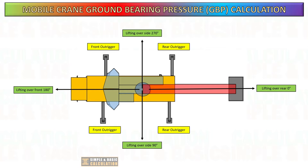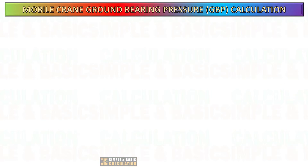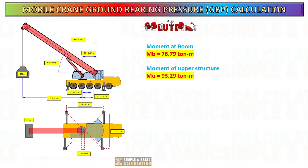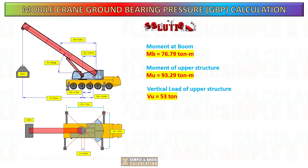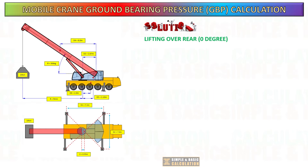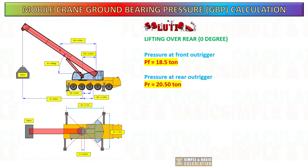In part 1 of this video, we computed the outrigger pressure that occurs when the boom of the mobile crane is facing or lifting is performed towards the rear. This is the list of values we get from that calculation: moment at boom, moment of upper structure, vertical load of upper structure, total vertical load, and load per outrigger. After getting all results, we get the pressure in each outrigger on the front and rear of the mobile crane.